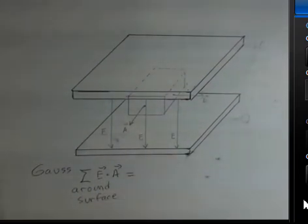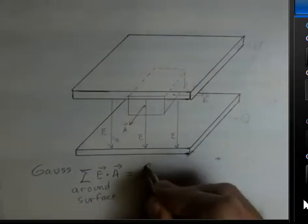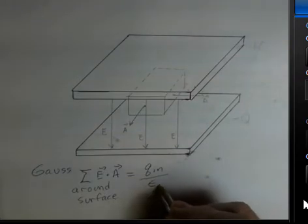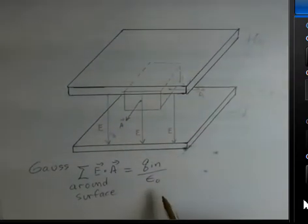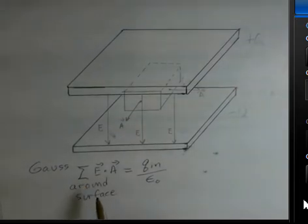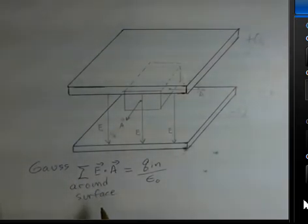that result will be equal to the charge that's inside the surface. I'm using small q here. Divided by an electric constant, epsilon naught. This is Gauss's law in non-calculus form. If we add up the electric field with dot product with the area vector around the surface, we'll come up with the result q over epsilon naught.